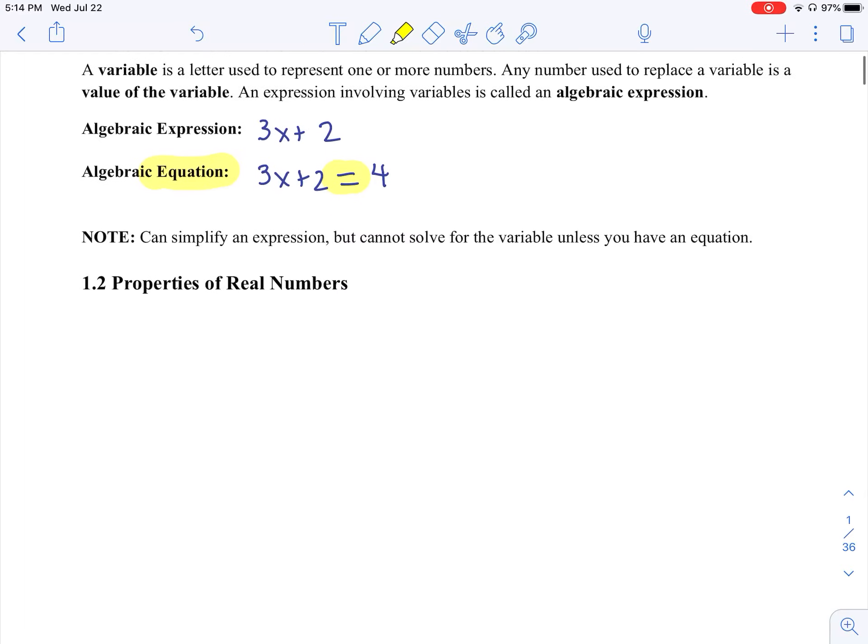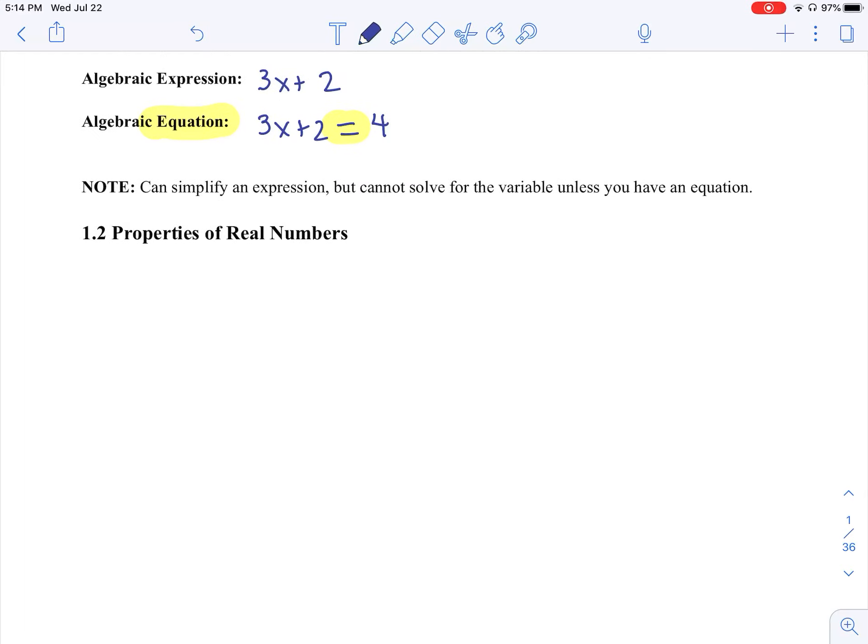So real numbers can be classified as either rational or irrational. We'll begin with how do I classify a number. Real numbers have two branches: they're either rational or irrational.